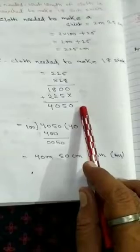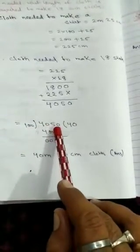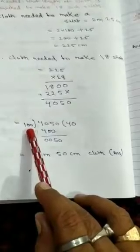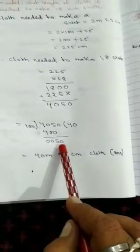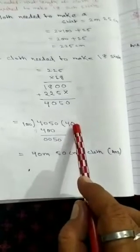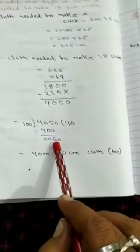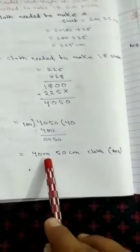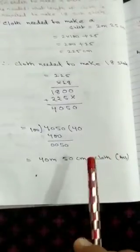But you have to convert this in centimeter as well as in meter. So you divide by 100, 4050 you divide by 100, the 100 into 4 is 400. After subtraction, you will get 50 as the remainder. So again, you divide by 0, multiply by 0 here. So remainder is 50. So answer will be 40 meter, 50 centimeter cloth is needed to make 18 such shorts.